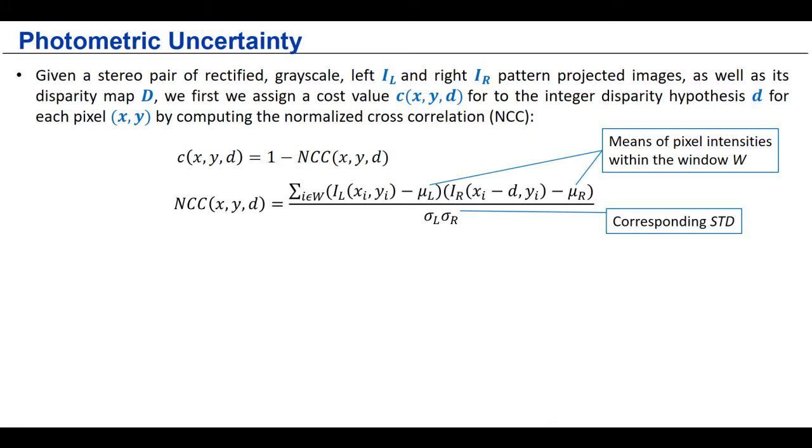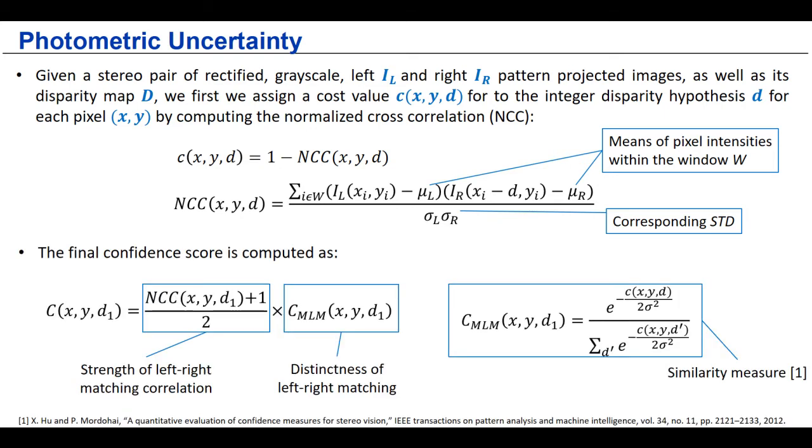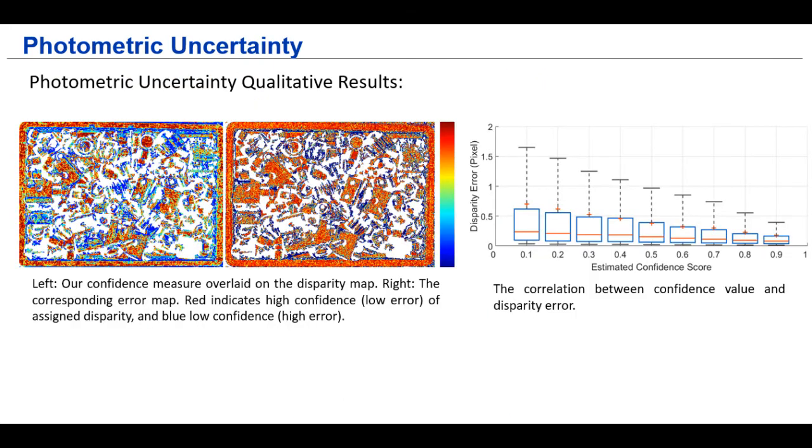Specifically, given the input disparity map and the pattern-projected stereo pair, we first compute the cost curve for the stereo matching hypothesis based on the normalized cross-correlation. The final confidence score can provide the uniqueness of the assigned disparity and the actual correlation of the left-right matching. To evaluate the estimates, we boxplot the correlation between the error map and our estimated confidence score. We can see the decreasing of the disparity error when the estimated confidence score increases.